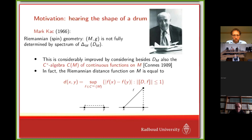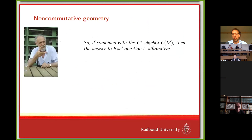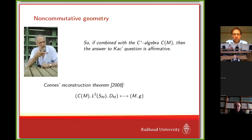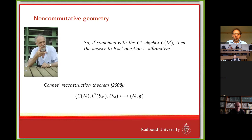So if this spectrum of Dm is combined with the C*-algebra C(M), then you can answer Kac's question in the affirmative. This combination — it's crucial to see how you do it — is not just a package of both, but you combine them in a certain fashion. C(M) acts as operators on L2 sections of the spinor bundle, on which the Dirac operator acts as an unbounded operator. This device on the left-hand side, the spectral triple, is the basic ingredient for doing noncommutative differential geometry. Connes proved in 2008 that under suitable conditions one can recover M with its metric structure as well as spin structure — that's the reconstruction theorem.